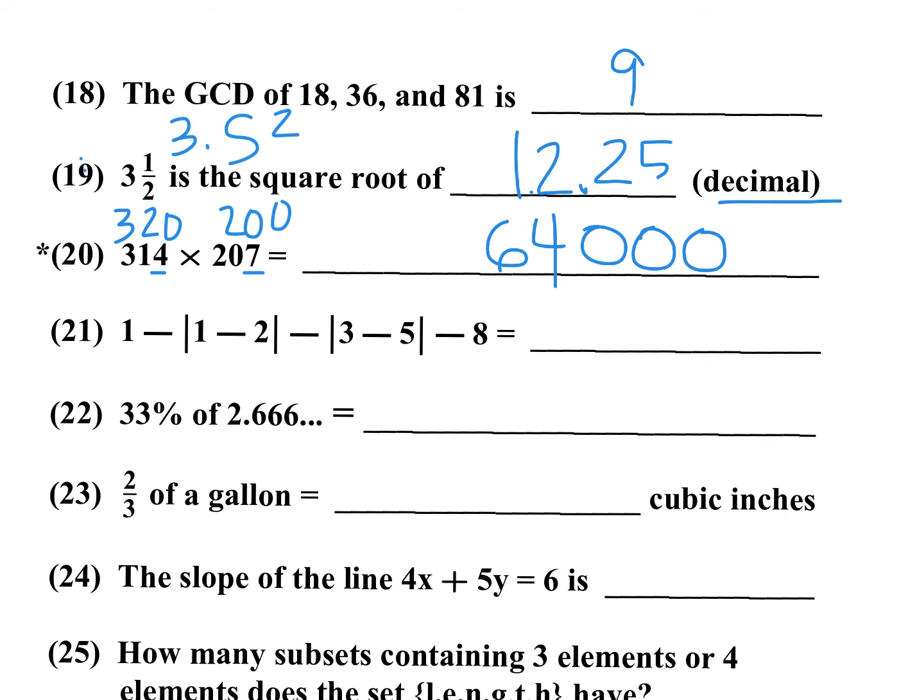So 1 minus 2 is negative 1. Absolute value is positive 1. 3 minus 5 is negative 2. Absolute value is 2. So you have 1 minus 1 minus 2 minus 8. Well, this 1 and that minus 1 will cancel out. So you have a minus 2 minus 8 would be a minus 10 or negative 10.